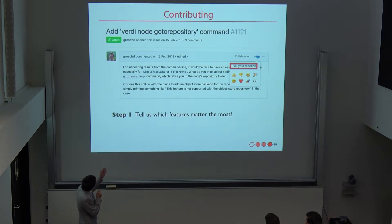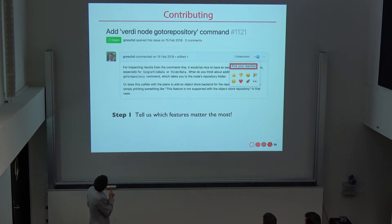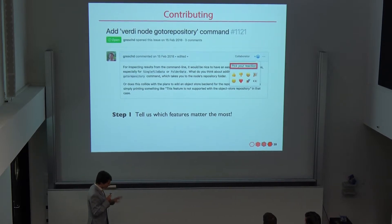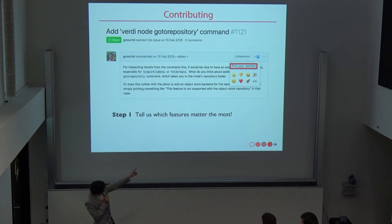On GitHub, you can simply go to an issue — for example, as Alberto mentioned before, we should have a ready node, a go-to-repository command, where you can navigate to a folder and work with files. If this feature is important to you, just give it a thumbs up.